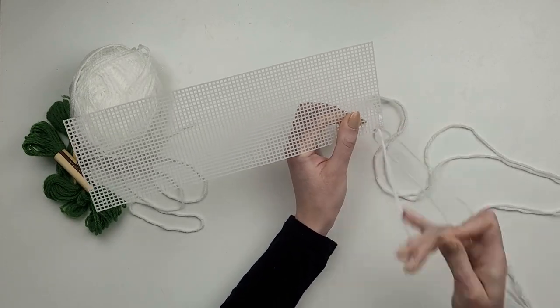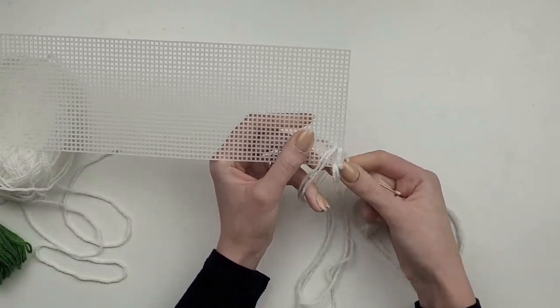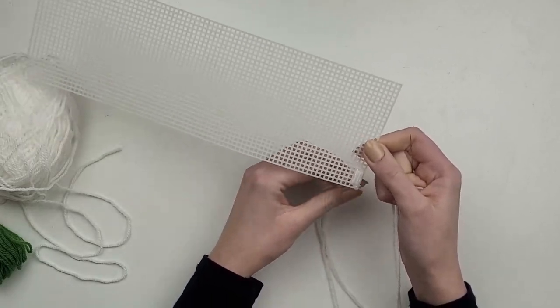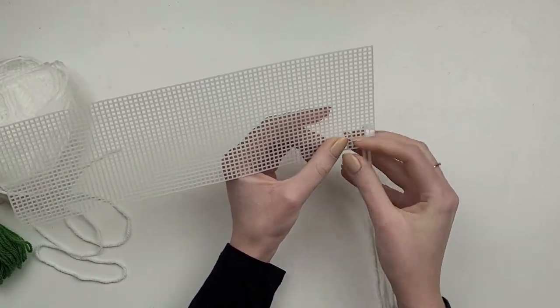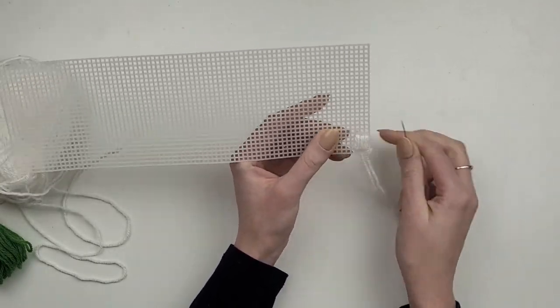I put the yarn through the needle, double it up and make a knot at the end. I make one square at a time. I start from the back of the canvas and go four holes up and push the needle back, and then again from the bottom up and to the back.